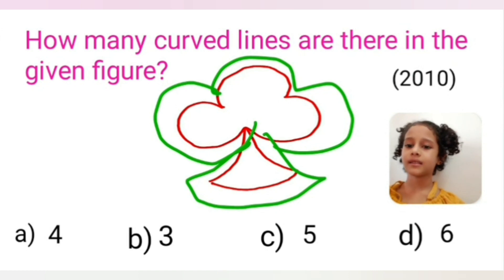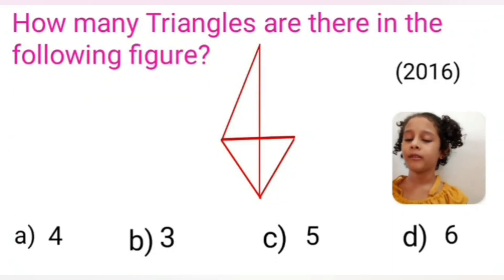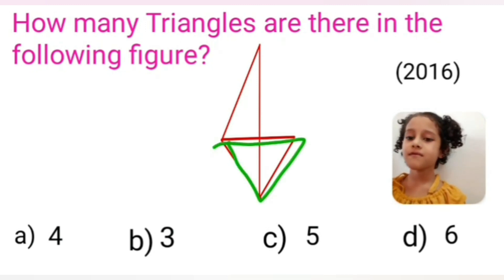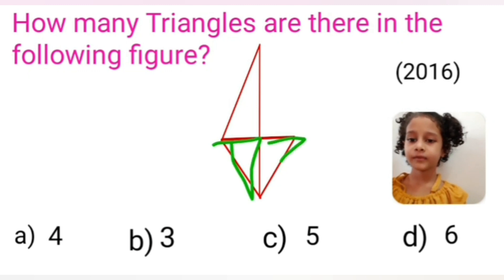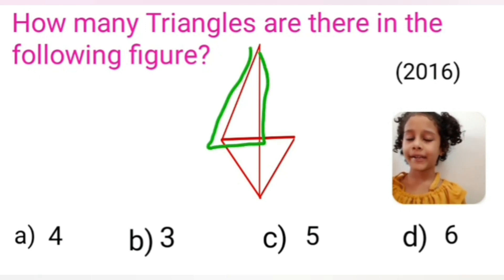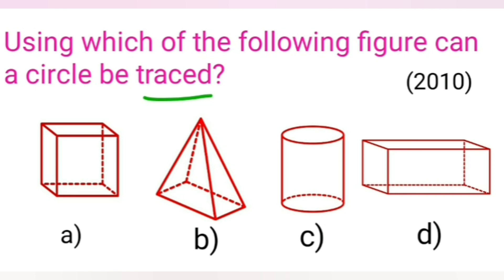Let's take six. How many triangles are there in the following figure? Let's count triangles: 1, 2, 3, 4, 5. Five triangles are there in the given figure.